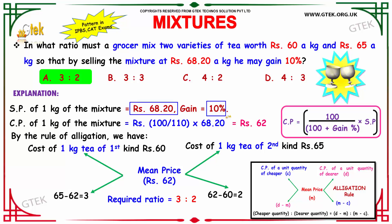Let us see how to solve this problem. The cost price of 1 kg of the mixture needs to be found. The cost price is calculated as 100 divided by (100 plus gain percentage) multiplied by SP. That is, 100 divided by 110, multiplied by Rs.68.20. Writing it down and calculating, you get the cost price to be Rs.62.20 paise.